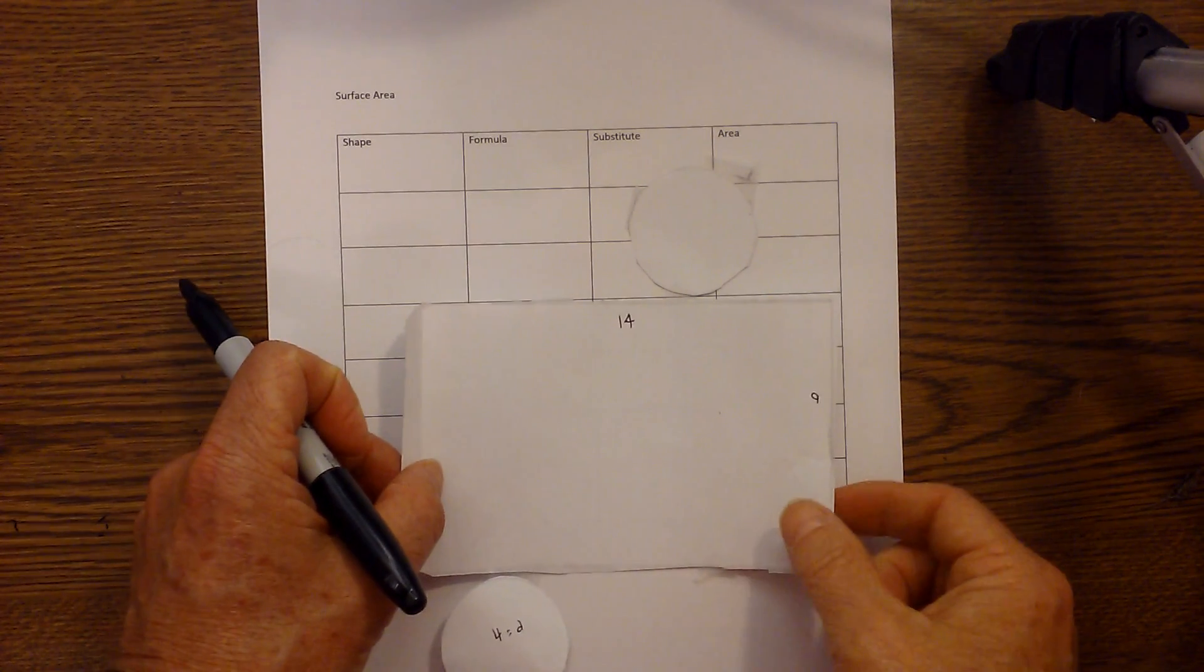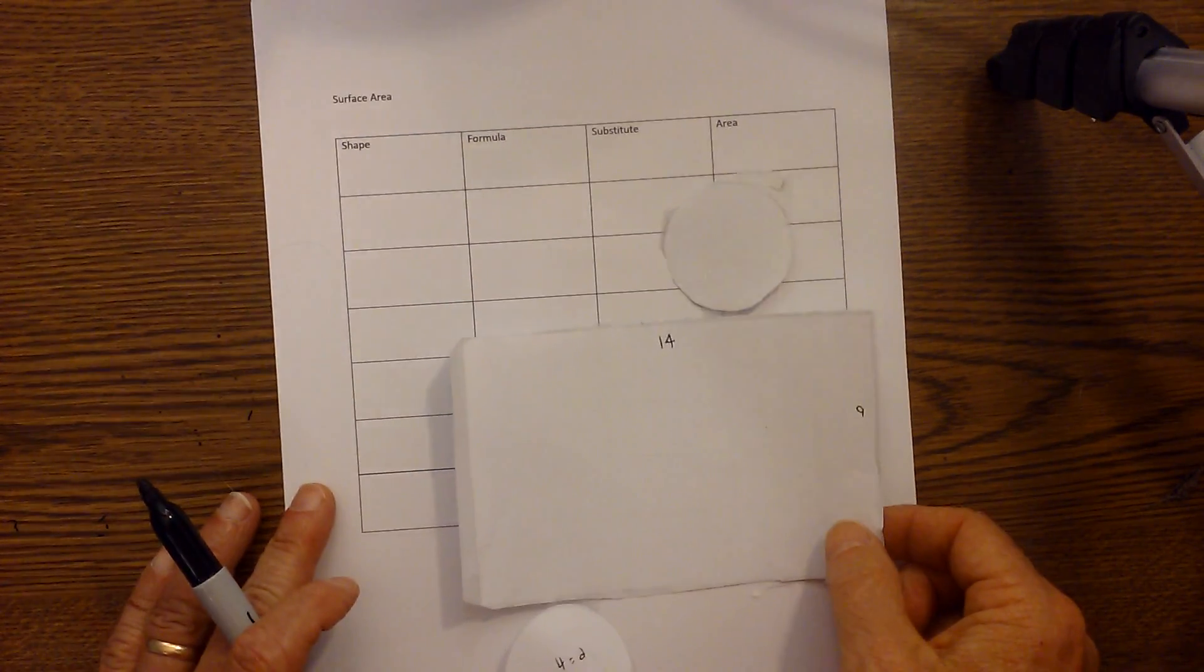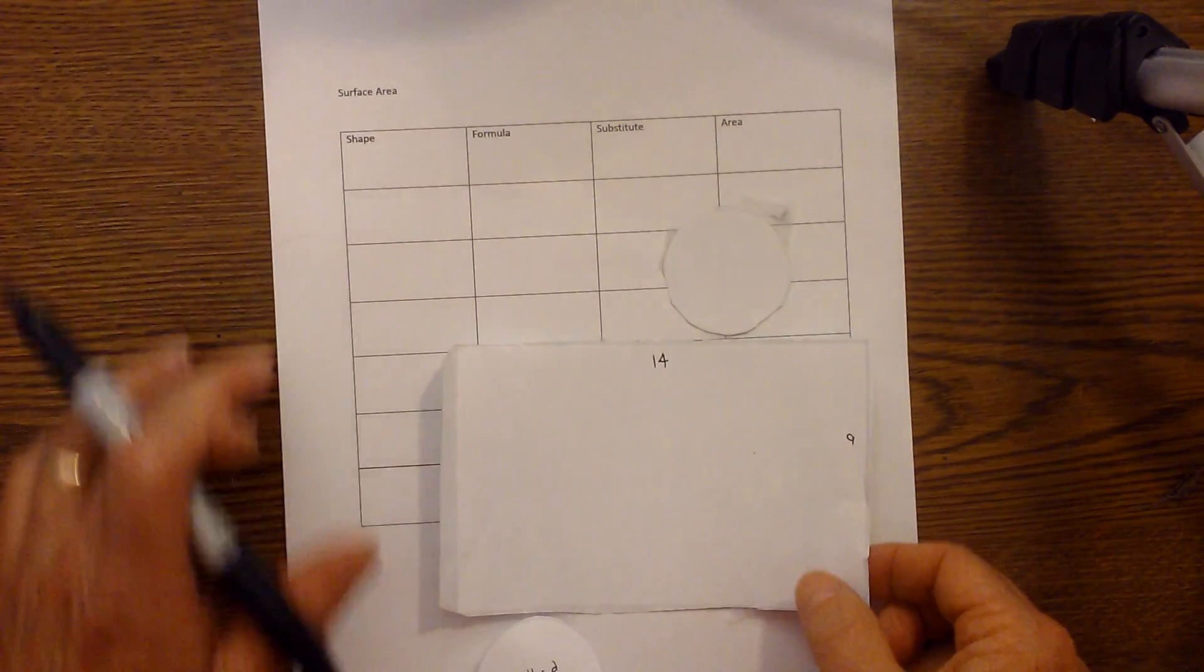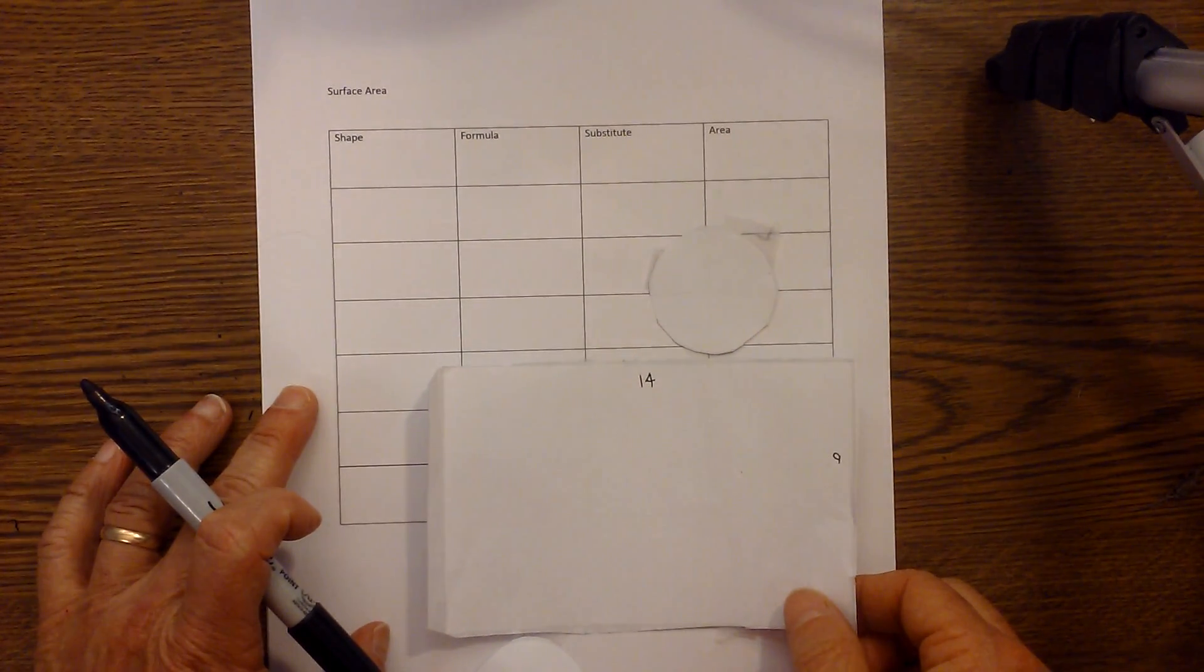Now here is your cylinder unrolled. So let's just go ahead and plug the numbers into our grid and then total it and we'll have our total surface area.